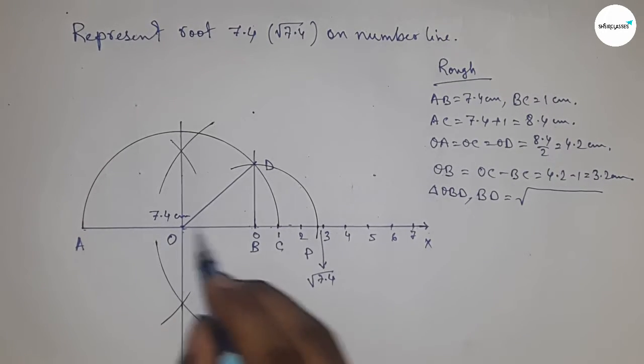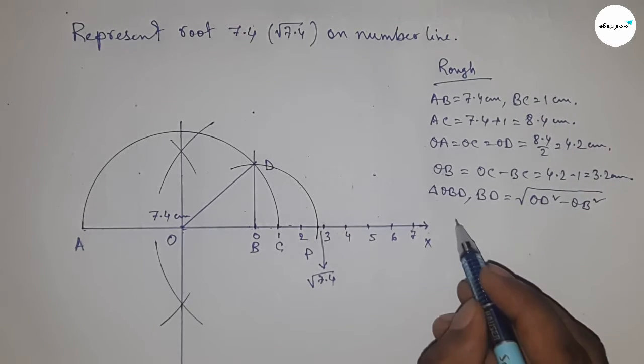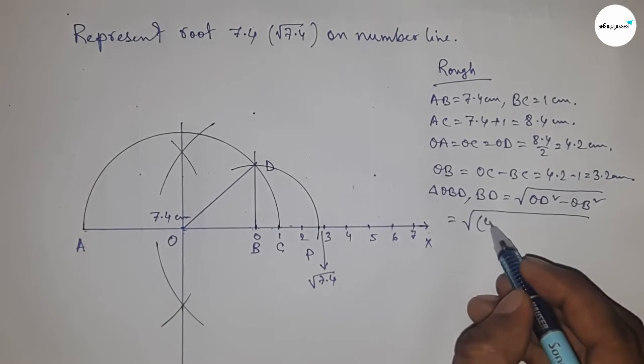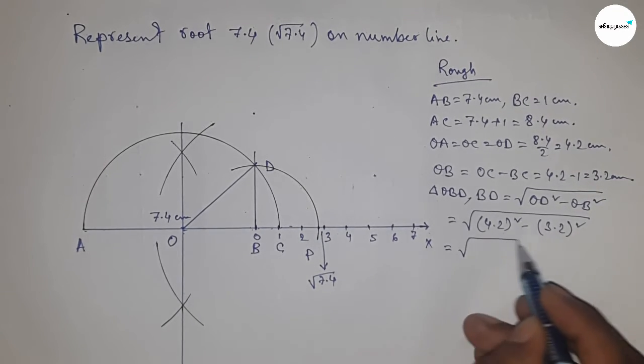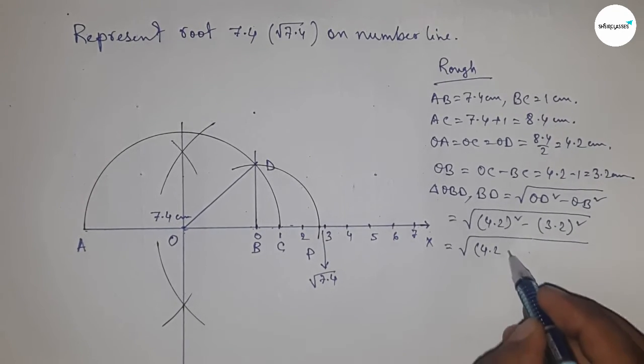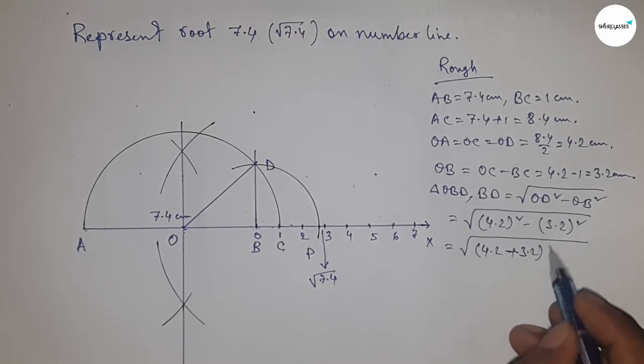Putting the values of OD and OB. Next, I'm going to use the formula: a squared minus b squared equals (a plus b) times (a minus b).